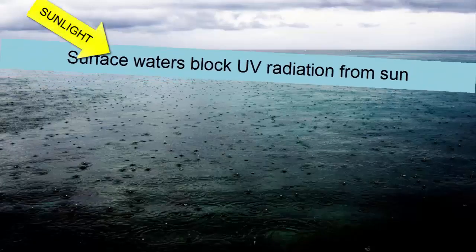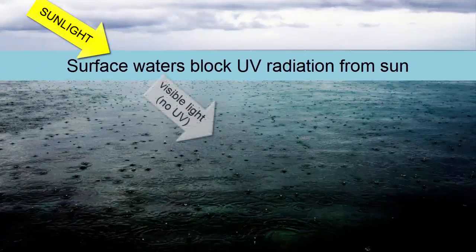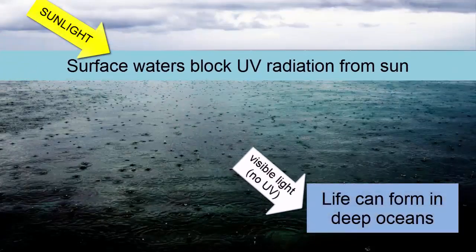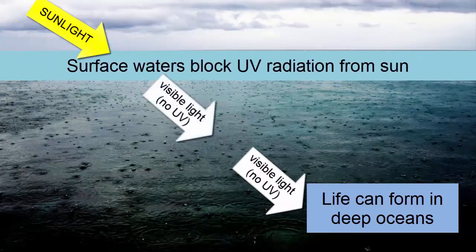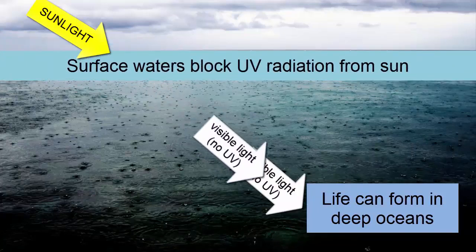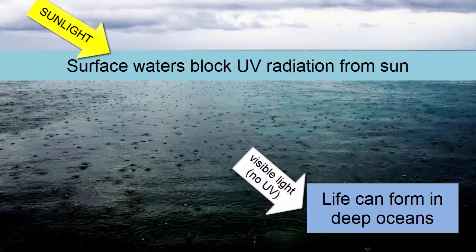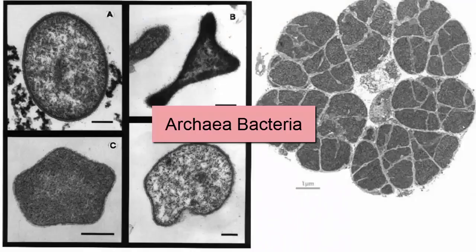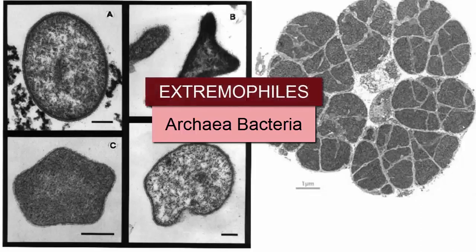Surface waters in the ocean block ultraviolet radiation, and thus oceans are the perfect place for life to first form. What were these first organisms like? The very simplest single-celled bacteria, likely ones that could handle extreme conditions such as high heat and no light, also known as extremophiles.